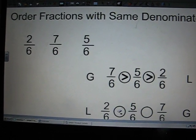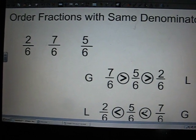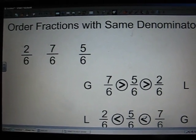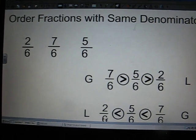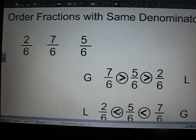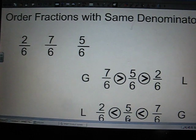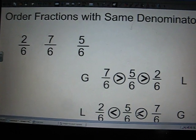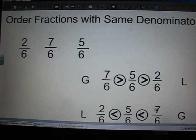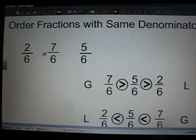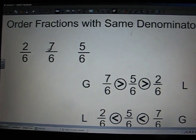I need my greater than, less than signs. Alligator eats the bigger fraction. So 2 sixths is less than 5 sixths. And 5 sixths is less than 7 sixths. So remember, when your denominators are the same, we are only looking at the numerators.